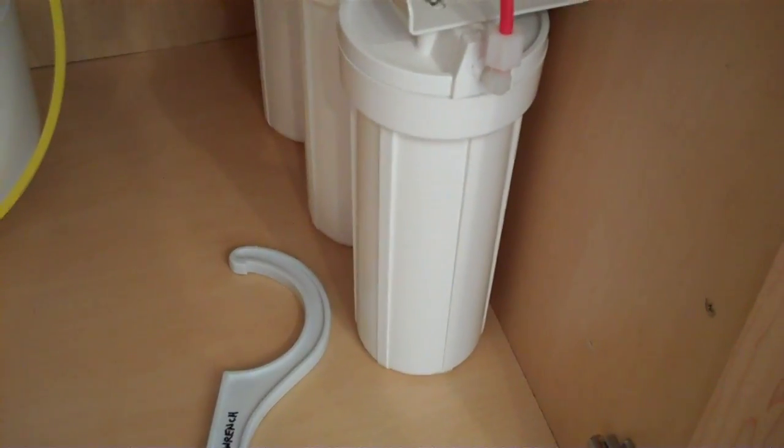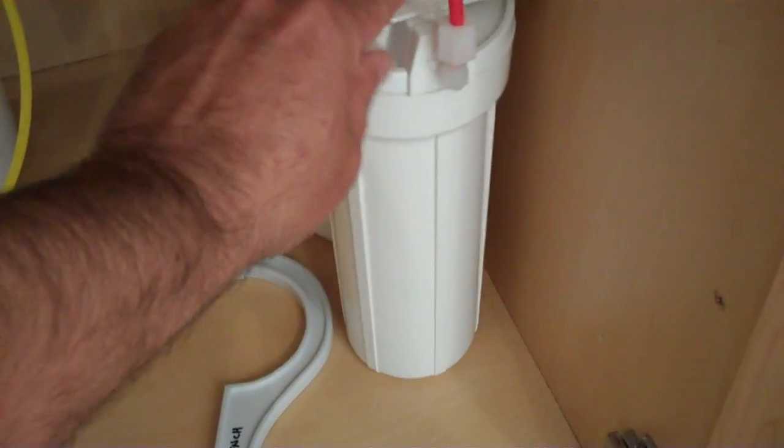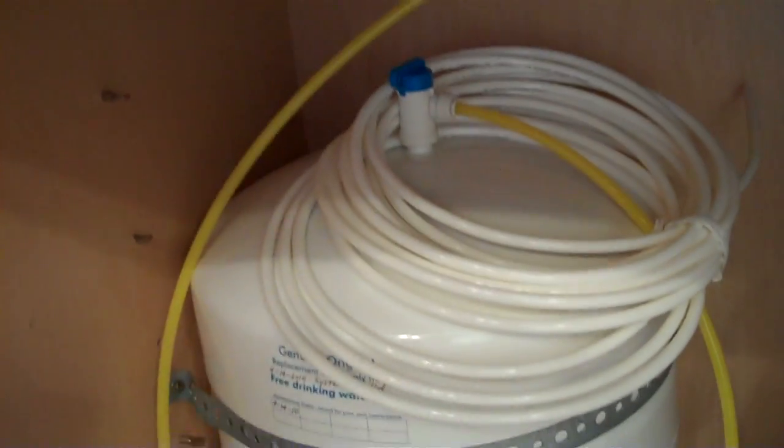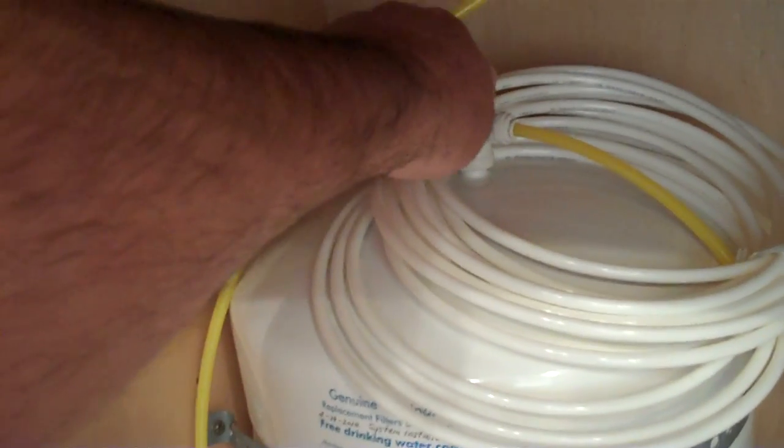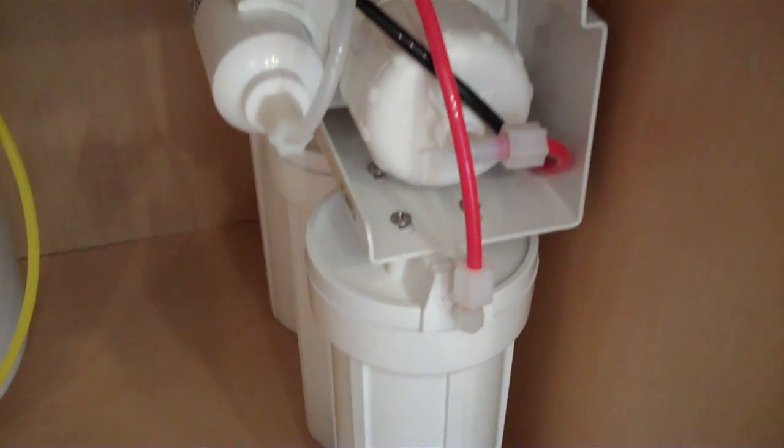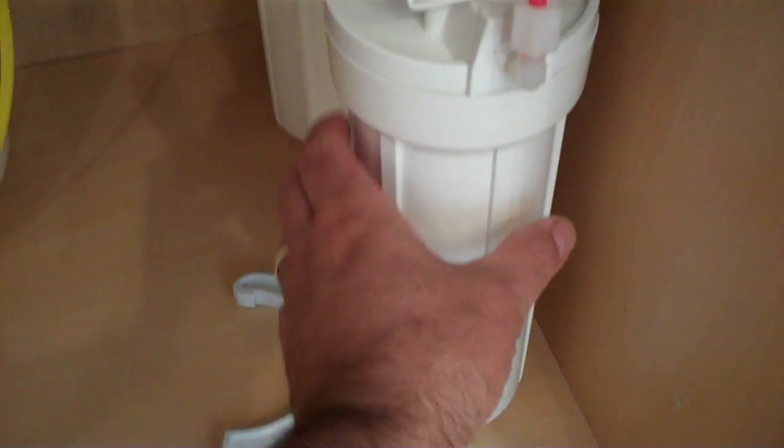These things are simple to change out. The first step is obviously to turn off the water. There's a line that comes into this system, so under my sink I turn off the water. Then you turn off the pressure tank valve—you just turn it 90 degrees till it's off, blocking the water. Then you go to your dispenser and let some water out and let the pressure off.